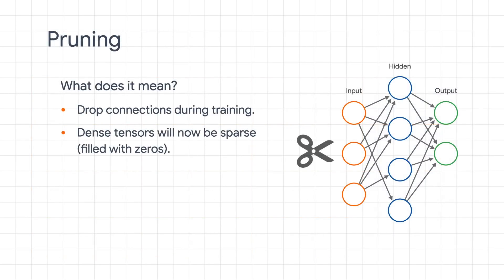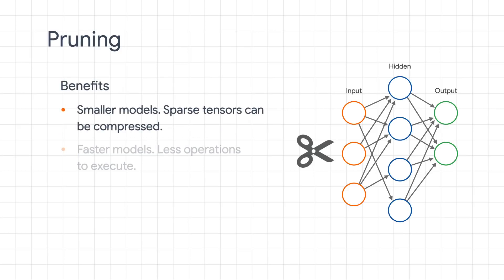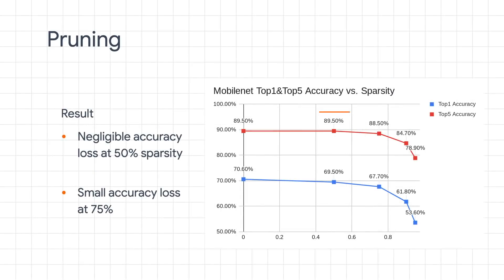The third optimization method is pruning, which shrinks the model by making some of its weights zero. A pruned model is not only smaller but also has reduced computational needs during inference, making it faster. At 50% pruning — removing half the weights — the accuracy drop is quite insignificant, around 1 percentage point. Pruning is also compatible with quantization, so you can prune your model first and then apply quantization to get a model that is, for example, 8 times smaller than the original float model with very minimal accuracy drop.